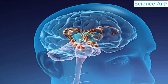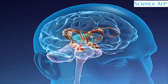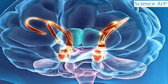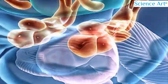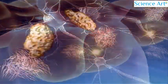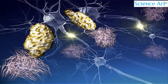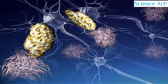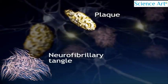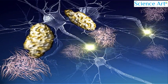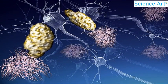A plaque is an abnormal cluster of protein fragments. Such clusters can be found between nerve cells in the brain of someone with Alzheimer's. A microscope will also show damaged nerve cells. In them are tangles called neurofibrillary tangles. These consist of twisted strands of a different protein.